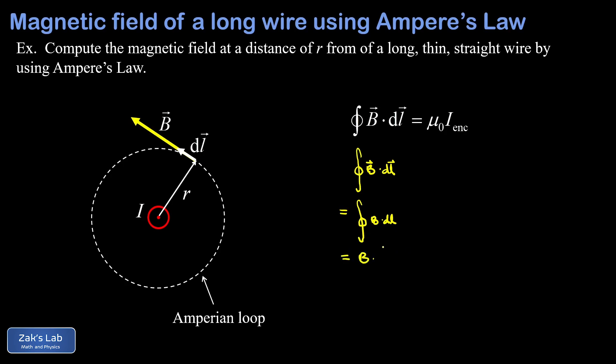Now we have B times the integral of dℓ, where that integral is taken around the entire closed loop. The path integral of dℓ itself around a circle of radius R is just the circumference of that circle, and that's 2πR.